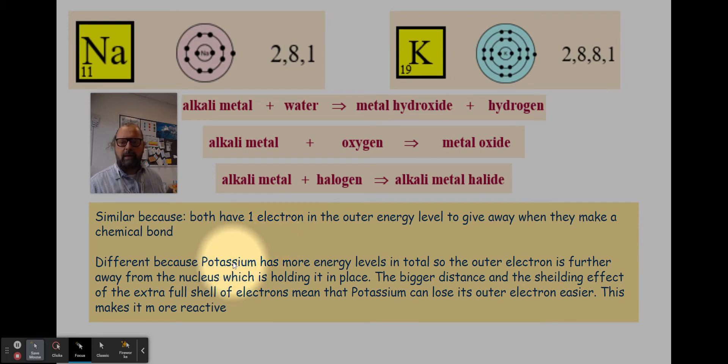And remember we can explain why potassium is more reactive by talking about the distance that outer electron is away from the nucleus. So the nucleus is holding these electrons in place because the nucleus is positive and is attracting the negative electrons to it. And the further away the outermost energy level gets, the bigger the distance is, the weaker that hold of the nucleus pulling on it. And so potassium loses its outermost electron easier than sodium. Potassium is more reactive than sodium.